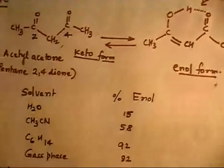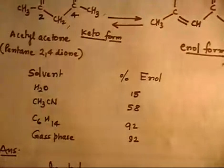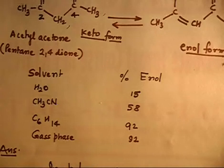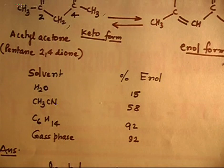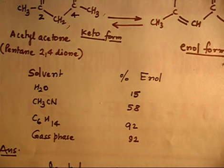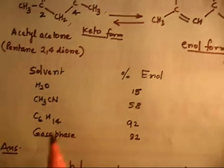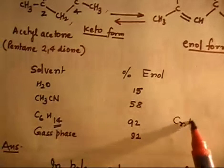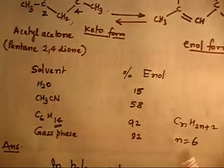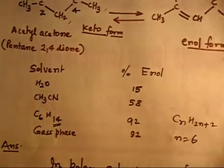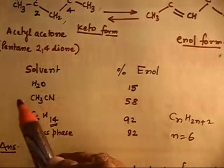The question asks about tautomerization in different solvents. In H2O the enol content is 15%; in CH3CN, which is slightly less polar than water, it is higher; and in C6H14, which is an alkane — non-polar, formula CnH(2n+2) with n=6 — the enol content is even higher. In the gas phase it is almost 0% polarity.